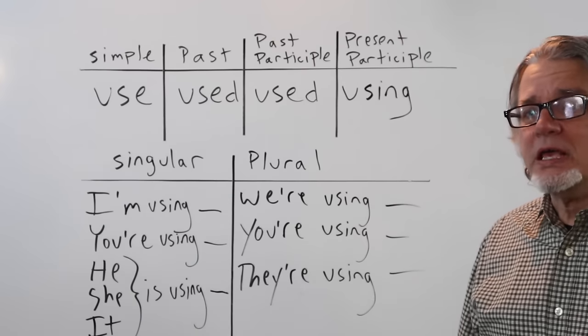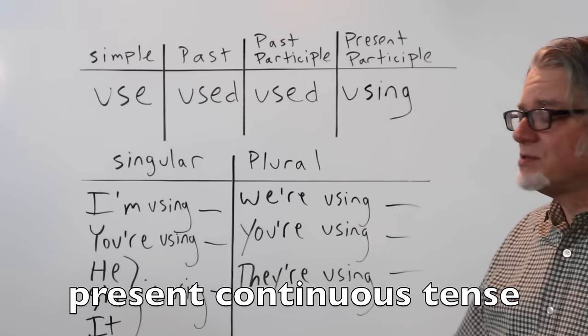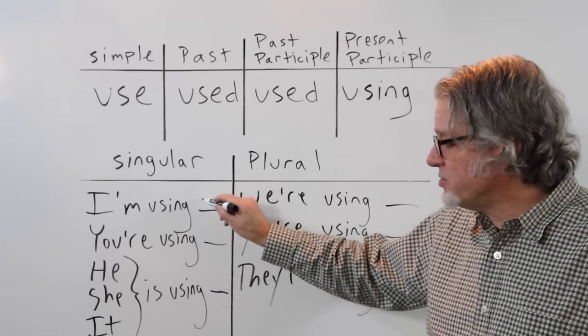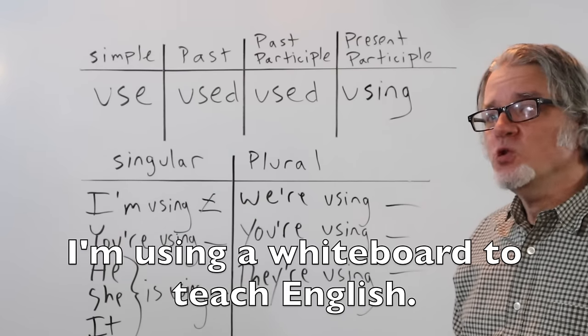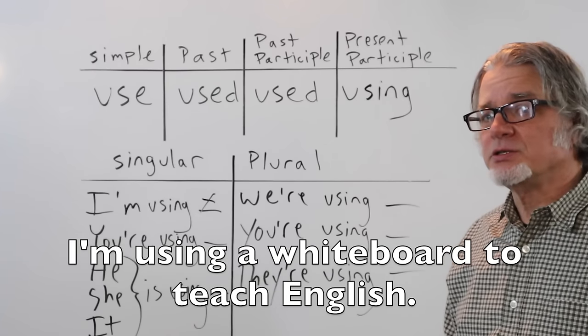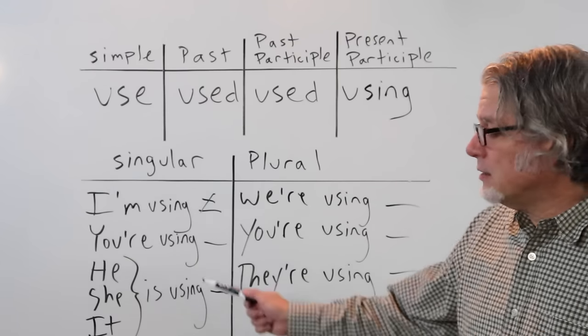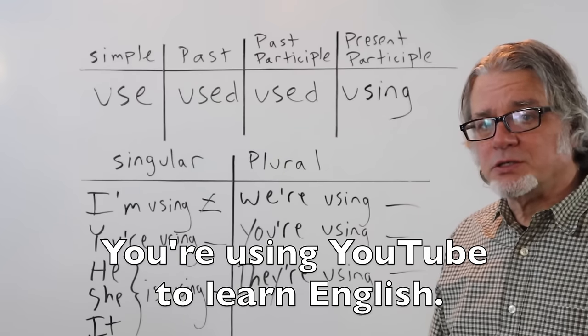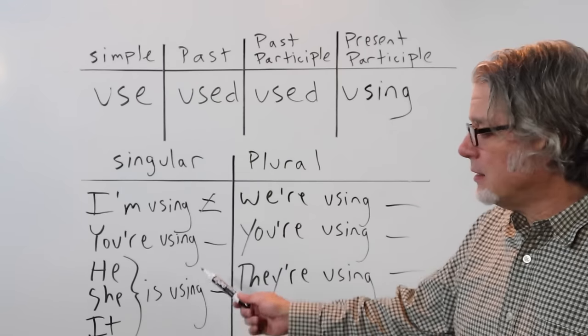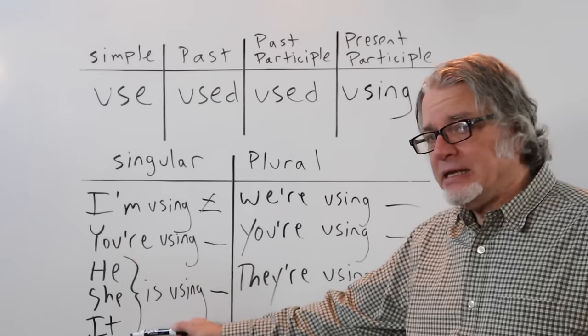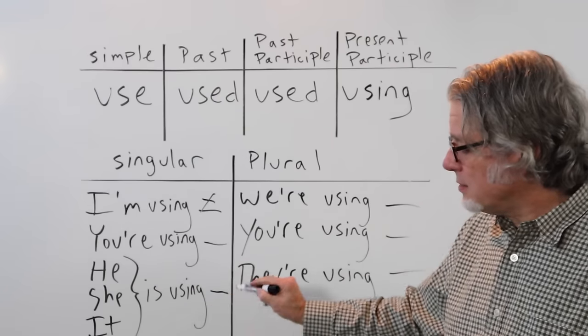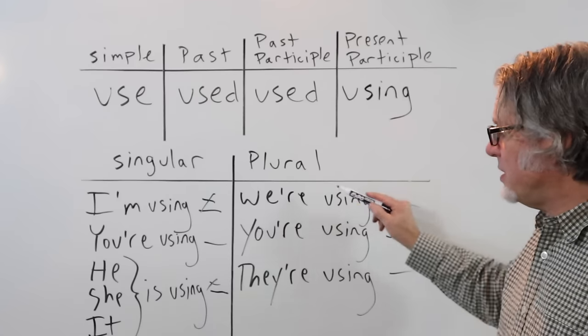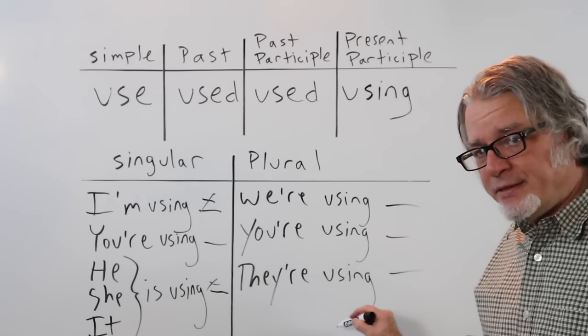Here's the verb use in the present continuous tense. I'm using, and then here's the thing. I'm using a whiteboard to teach English. Or, you're using YouTube to learn English. He, she, it is using, and then the object. And for the plural, we're using, you're using, and they're using, followed by the object.